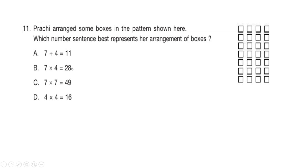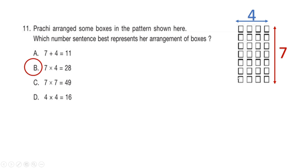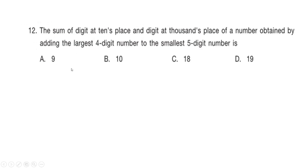One easy way to find the answer, if you're confused, is to count the number of boxes and see which answer matches. If you know the rule, you count the number of boxes in the rows, which is 4, and the number of boxes in one column, which is 7. So 4×7=28 is the total number of boxes. Hence our right answer is option B: 7×4=28.